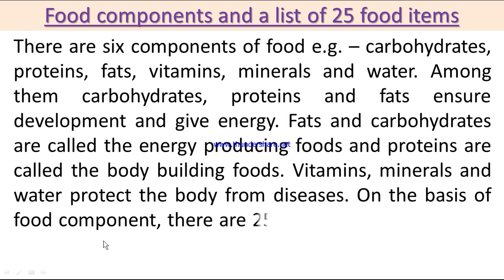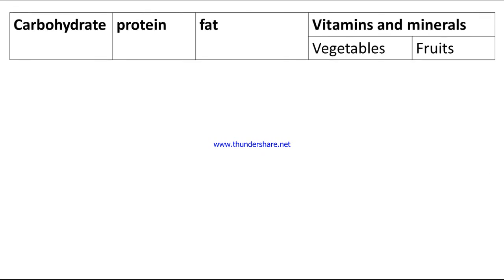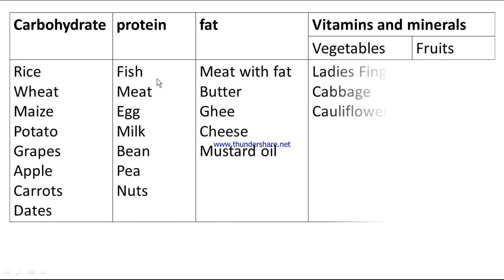On the basis of food components, 25 food items are listed below. The categories are: carbohydrate, protein, fat, vitamins and minerals, vegetables and fruits.